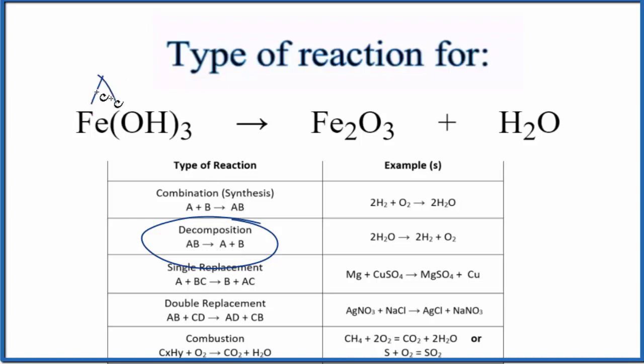You can think of this as AB, and that gives us A plus B. So the type of reaction for Fe(OH)₃ yields Fe₂O₃ plus H₂O is decomposition.